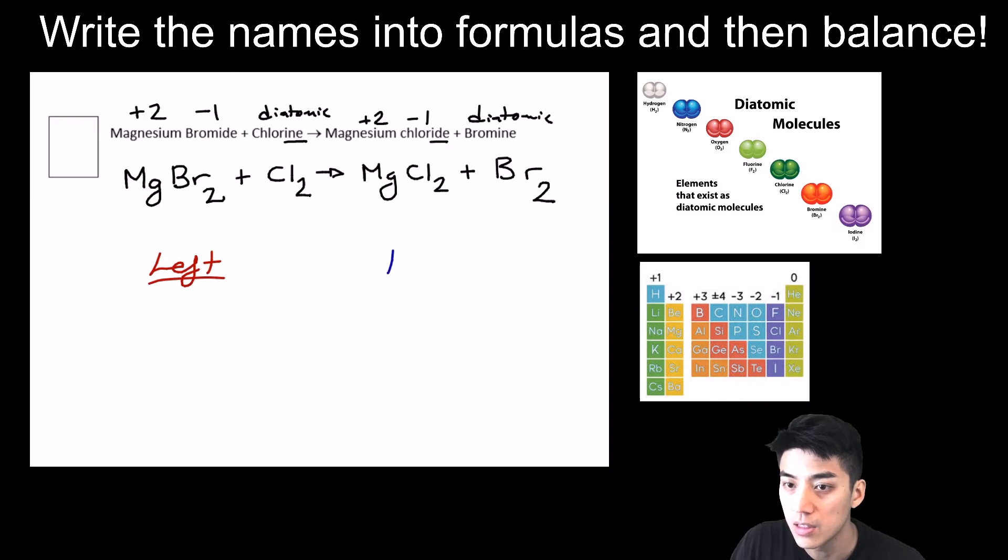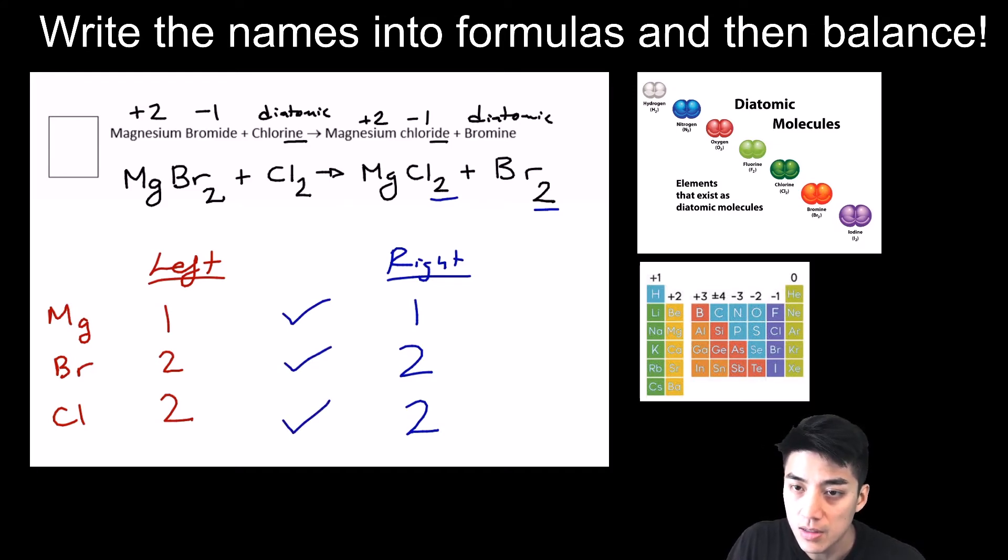We're going to count left and right all the atoms that are there. We have MgBr2 and chlorine. On the left, we've got 1 Mg, 2 Br, and 2 Cl. On the right, we're going to count 1 magnesium, 2 chlorines, and 2 bromines. So it looks like it's balanced already. The last thing to do is find the sum of the coefficients. This is a 1, 1, 1, and 1. So it's actually a sum of 4. You don't want to put zero because even though you don't have to write the ones in front, you have to assume that a 1 is there.